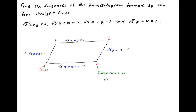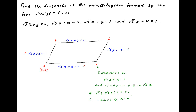The vertex D is the point of intersection of line CD with equation √3y + x = 1, and line AD with equation √3x + y = 0. The second equation implies y = −√3x. Substituting into the first equation gives −2x = 1, so x = −1/2 and y = √3/2. Therefore, the coordinates of point D are (−1/2, √3/2).